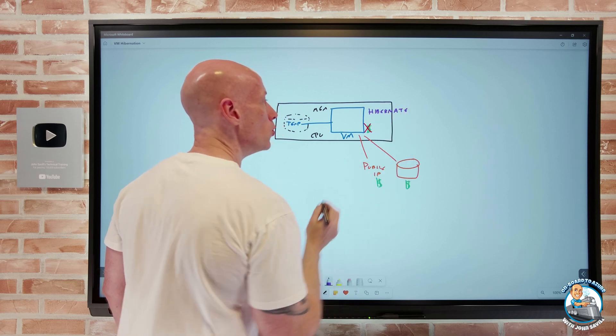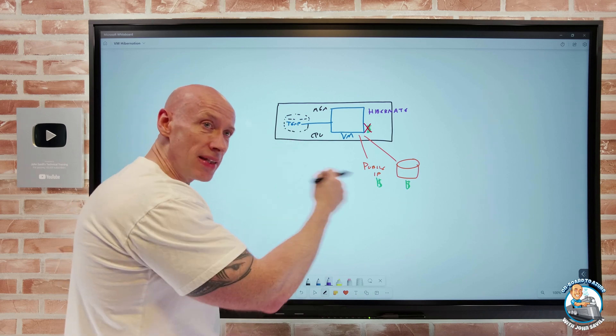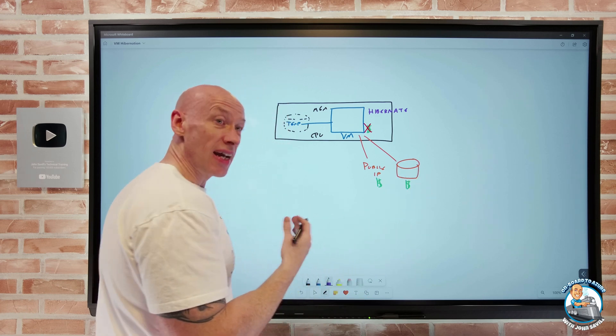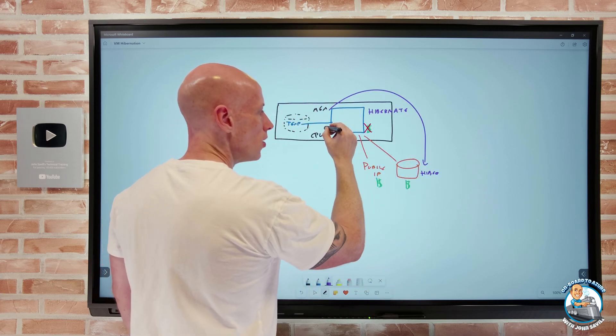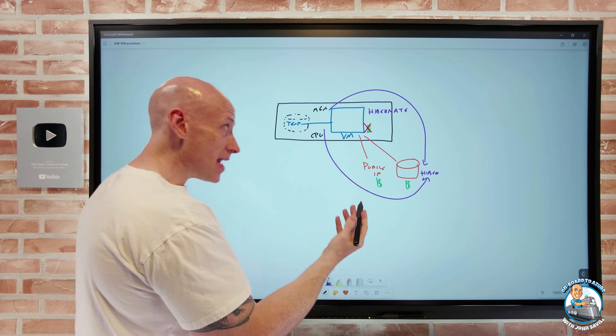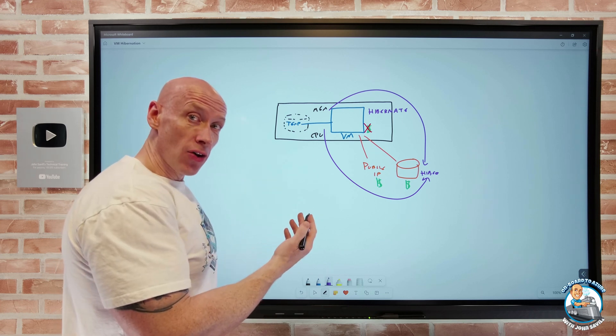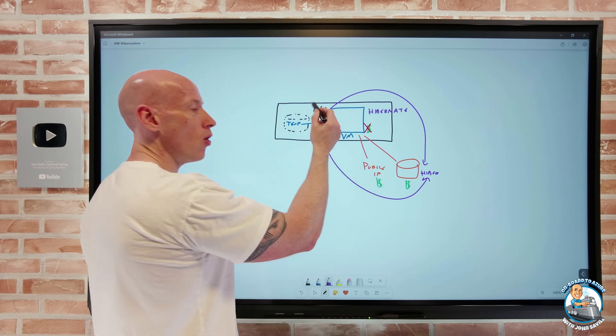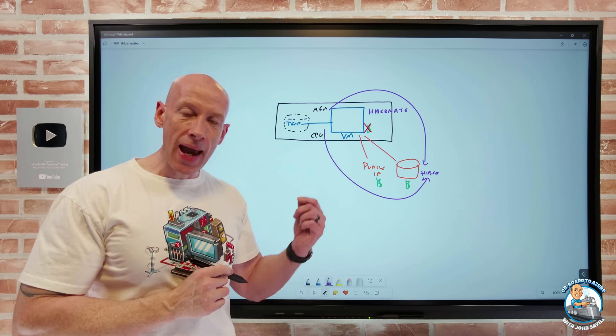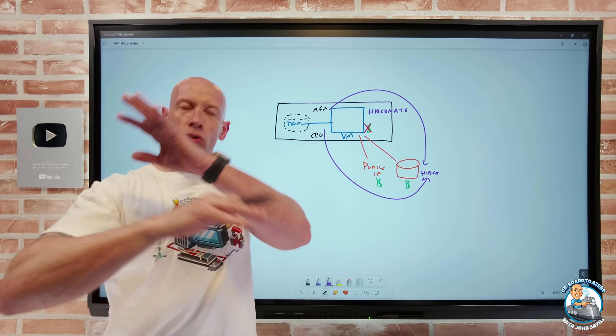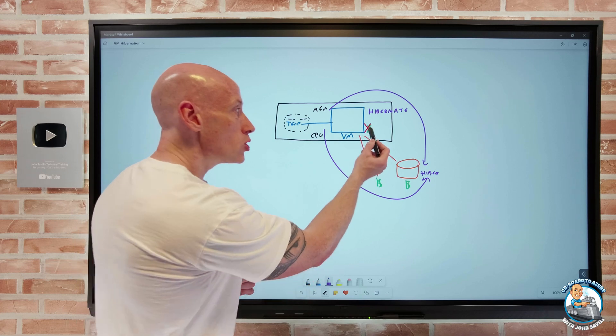And what hibernate will do is it will take that content of the memory. It will take, hey, the CPU state. It may also have the accelerated networking. There might be details about network adapters, et cetera. Well, on this OS disk, in the case of Windows, there's a hibernation file. And it's going to now save the state of these to that hibernation file. And then it will go and deallocate the machine from the node. And again, I'll stop paying for it. But now when I start that virtual machine again, it will read in the content of the memory. It will read in the content of that CPU registers, et cetera. And I'll be back to the exact point I was at when I did that hibernation exercise.